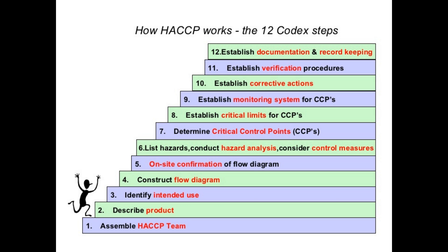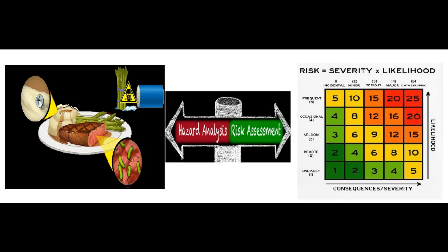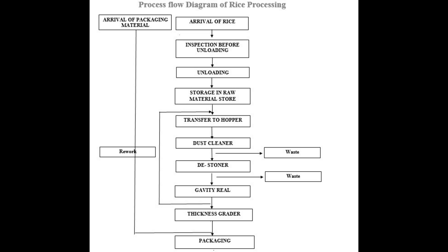After these three steps, the fourth step is the process flow chart or process flow diagram. A process flow diagram is a systematic presentation of the sequence and interaction of steps in the process, providing a graphical representation of the process flow. It is an important document used when conducting hazard analysis and risk assessment in steps 6 and 7. The food safety team will develop a clear, accurate, and sufficiently detailed flow diagram including sequence and interaction of steps, outsourced processes, raw materials, ingredients, packaging materials, where reworking takes place, and waste released or removed.